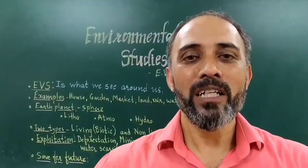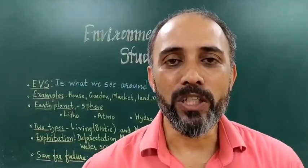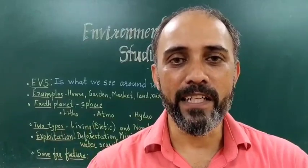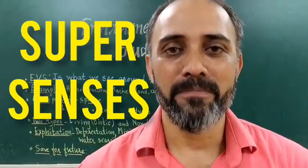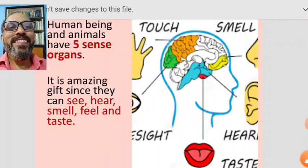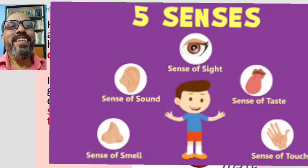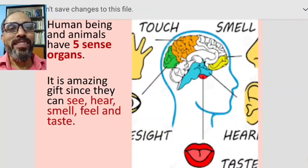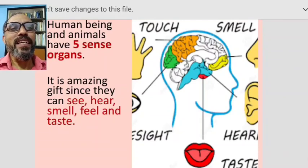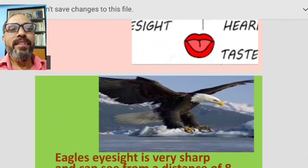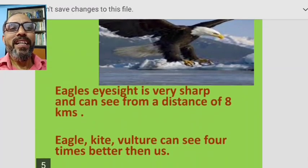It is a very lovely and interesting book, and you will surely enjoy it. Today we begin with the first lesson of EVS — Super Senses. Super senses are the five sense organs that human beings and animals have. It is an amazing gift — we can see, hear, smell, feel, and taste.